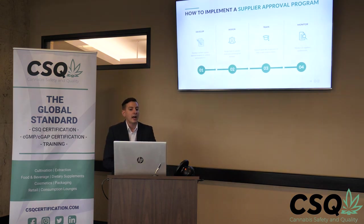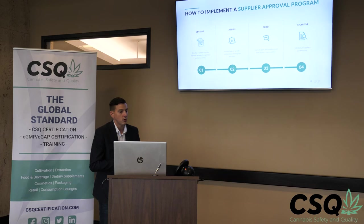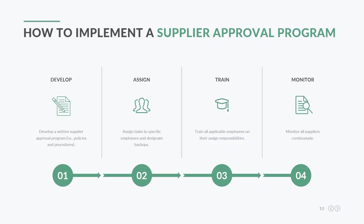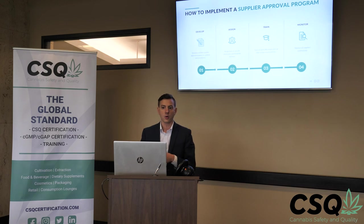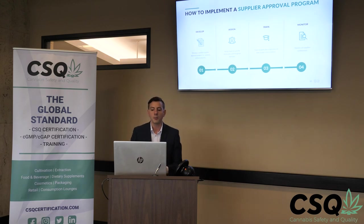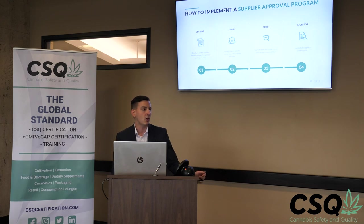Let's talk about how to implement a supplier approval program. I've identified four steps: develop, assign, train, and monitor. First, we need to develop a written supplier approval program — all the policies and procedures that go with it. Then we assign tasks to specific employees and designate backups, making sure that if someone leaves or is out, we're not left stranded.